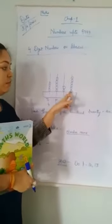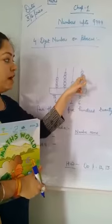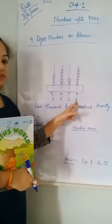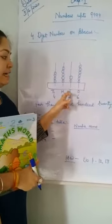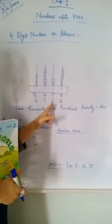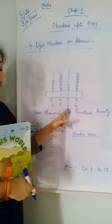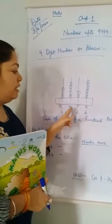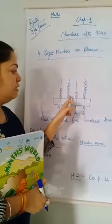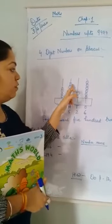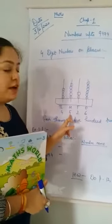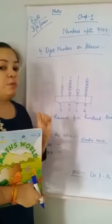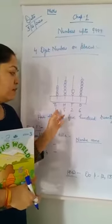So in ones: one, two, three, four, five, six. How many fields are there? Six fields are there, so we have to write six here. In tens: one, two — two fields, so we will write two. In hundreds: one, two, three, four, five — five fields. And in thousands: one, two, three, four — four fields are here in the thousand column.